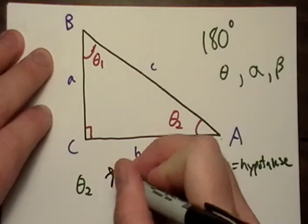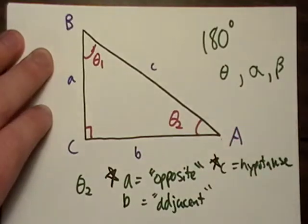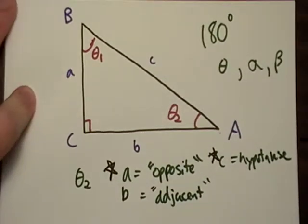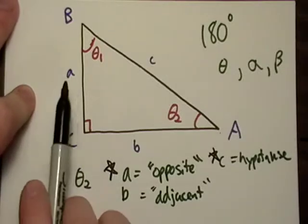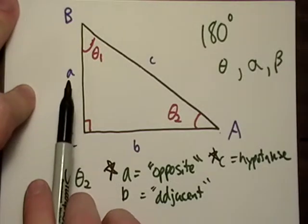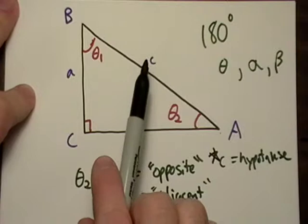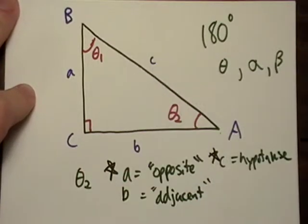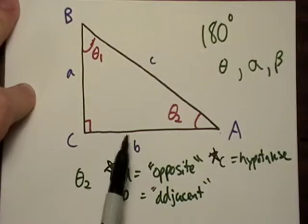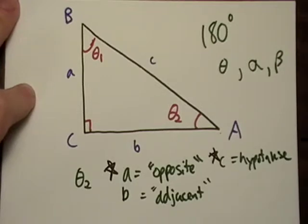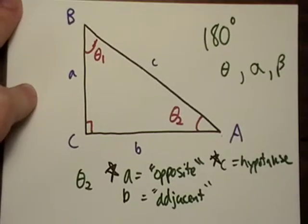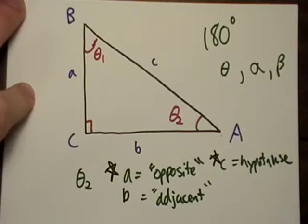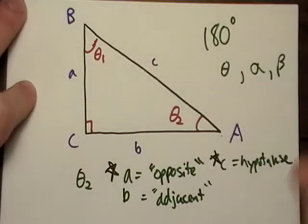I usually just look at side A and C, and once I've identified side A to be the opposite, and I've found the hypotenuse which is going to be the longest side, then I know that the last remaining side has to be the adjacent side.